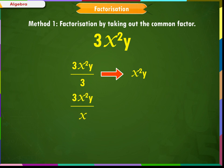Similarly, when we divide this number by x, we get 3xy. And by y, we get 3x². So, the factors of the expression 3x²y are 3, x, and y. Now, let us understand how to factorize a given algebraic expression by taking out common factors.